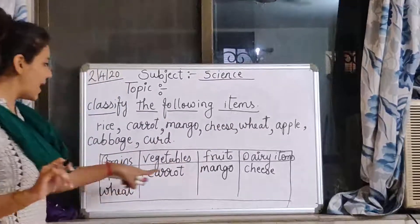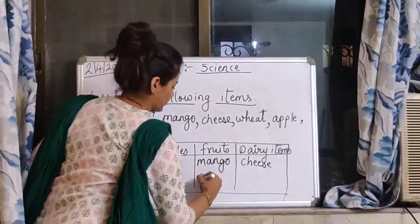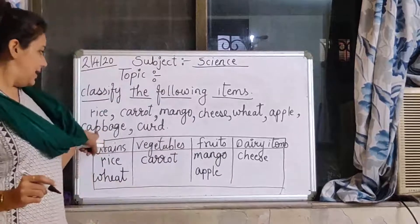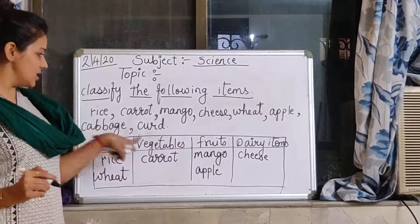Apple. Apple is fruit. And next is cabbage. Cabbage is vegetable.